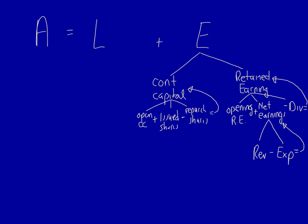Retained earnings is equal to opening retained earnings plus net earnings minus dividends. Add those three things together and it equals the retained earnings at the end of the period. That again shows up on the statement of financial position. Net earnings is calculated as revenue minus expenses.